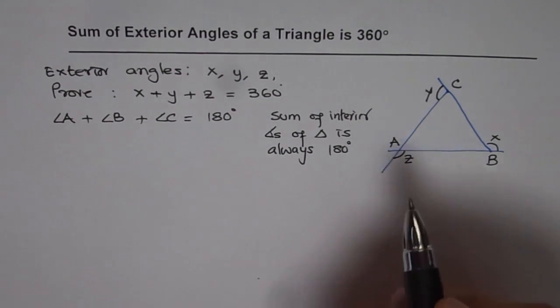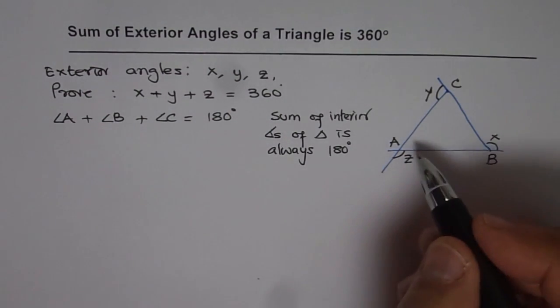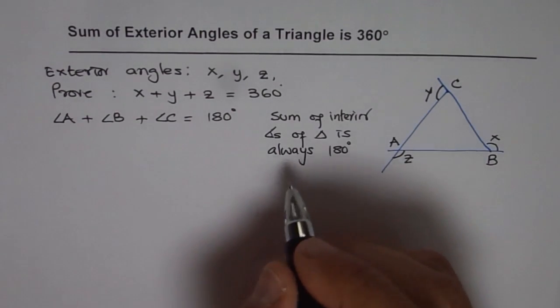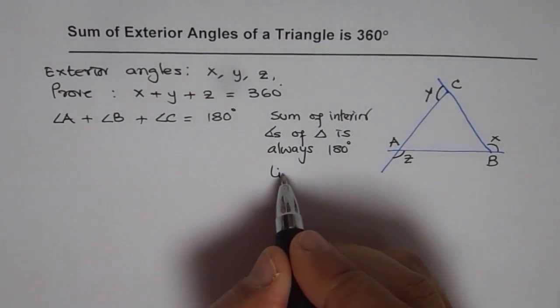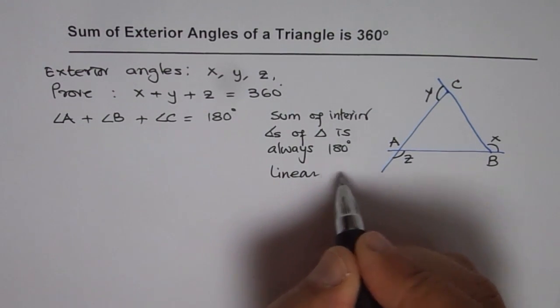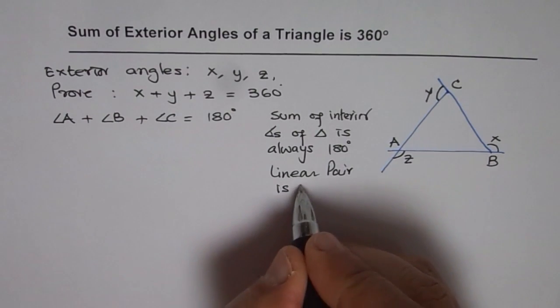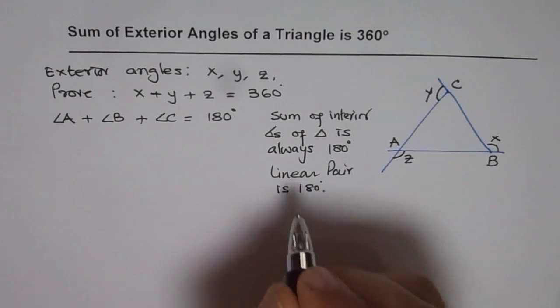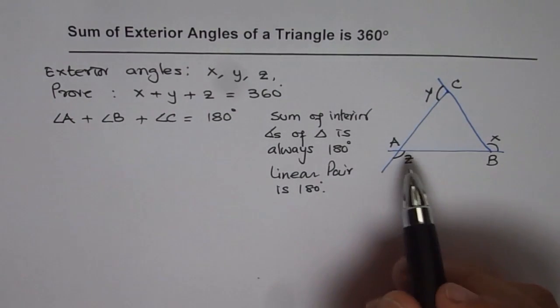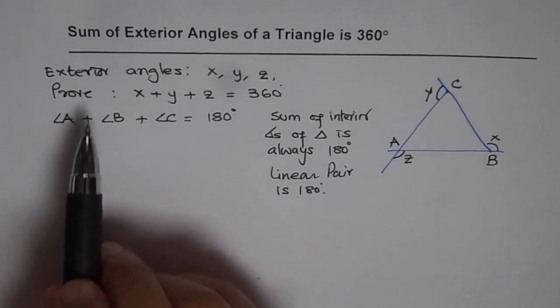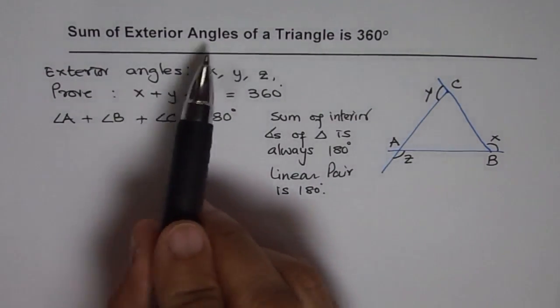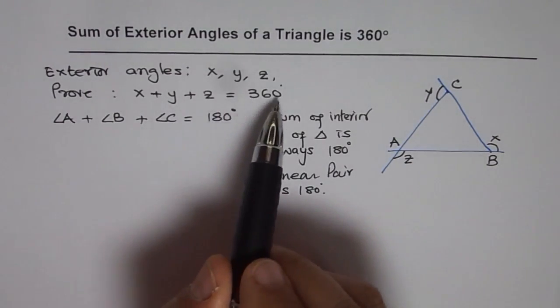And then we also know that a line makes 180 degrees. So we also know that linear pair is 180 degrees. And that is what we are going to use to prove our exterior angle sum to be 360 degrees.